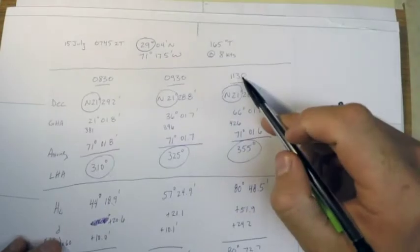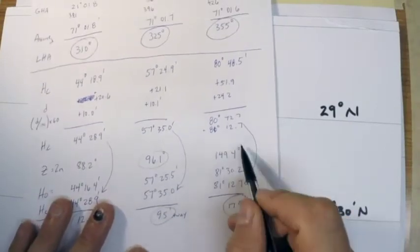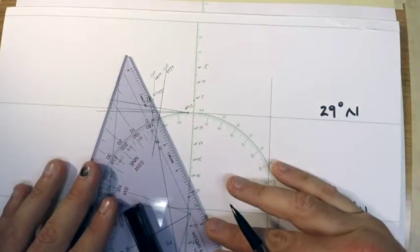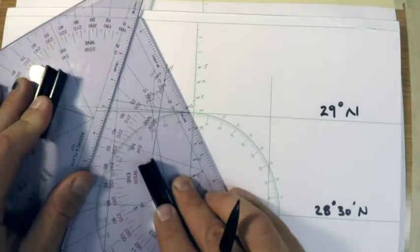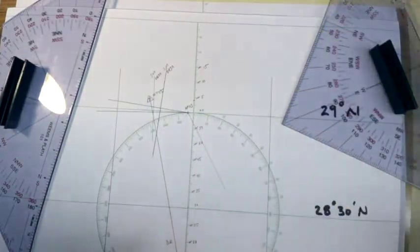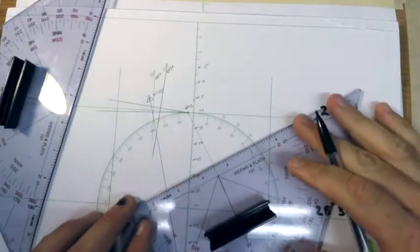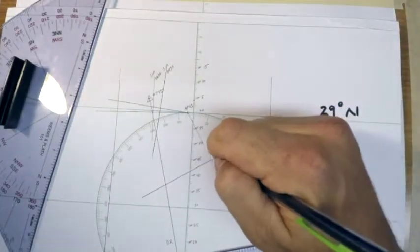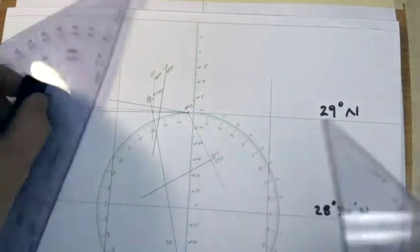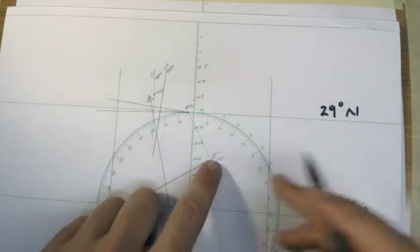Finally our last sun line was for 1130 and we measured that we were 17.5 miles towards an azimuth of 149.4. From the AP I'm in a direction of 149.4 and we said it was 17.5 miles towards. Once again I'll draw a perpendicular line and that represents the sun at 1130. These are not lining up yet, but remember this is a running fix problem and this 1130 is the time that they want us to do our running fix for.